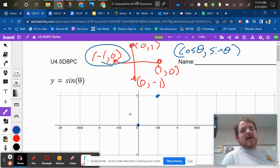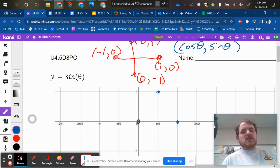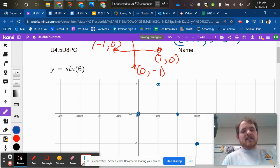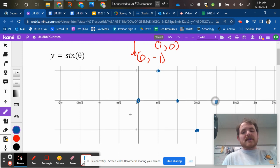At pi, right, because the angle is there, we're talking about the y value, which would be 0. And 3 pi over 2, which is 270, we're talking about the y value, which is negative 1. And then at 360, we're talking about the y value, which would be 0.